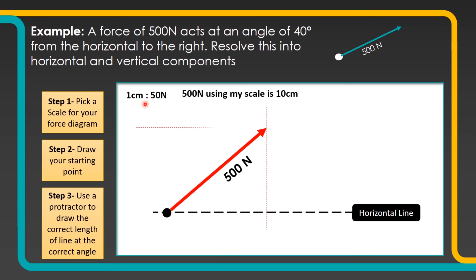Again, graph paper would make that slightly easier to do. And the same thing — a horizontal dotted line going across. You might be able to work out how we're going to find these horizontal and vertical components.